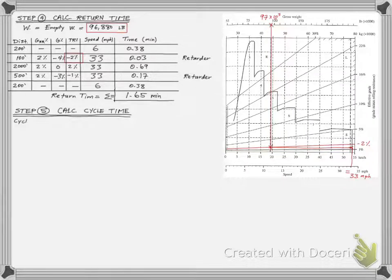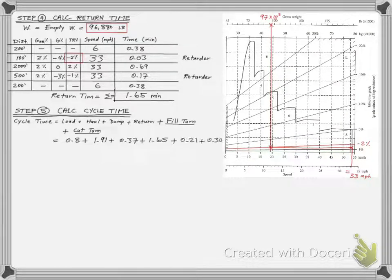The fifth step is to calculate the total cycle time by adding all these steps: loading, hauling, dumping, returning, and the maneuvering turns at the cut and fill areas. We add their values to get the total cycle time. Notice that we assume 0.21 minutes for the fill turn and 0.3 minutes for the cut turn. Please check the lesson video for more explanation of these values.